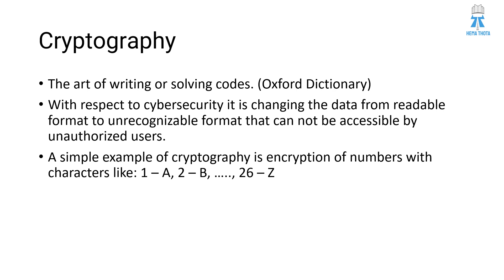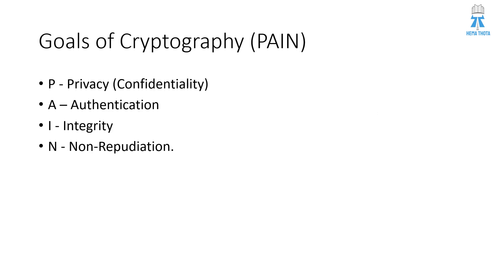Encryption is changing a readable format to an unreadable format, and decryption is converting the unreadable format back to readable format. A simple example of cryptography is substituting numbers with letters: A is 1, B is 2, C is 3, similarly up to 26 which is Z. We can replace in either way.